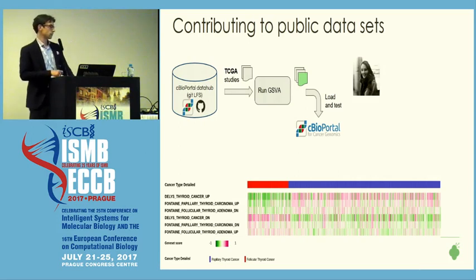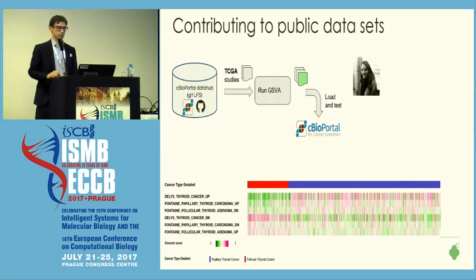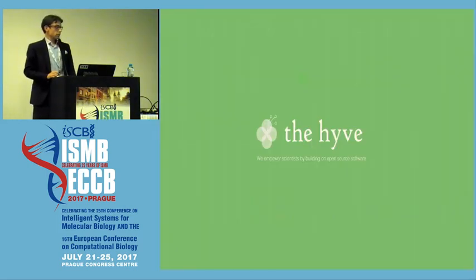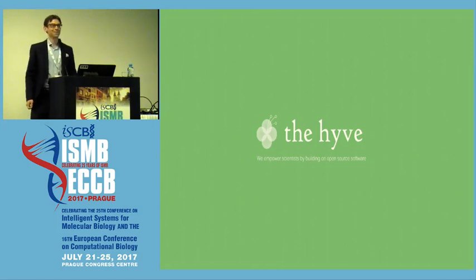Here on the bottom you see a nice example of thyroid cancer where there are some gene sets that nicely delineate papillary from follicle thyroid cancer. That's it. Thanks so much. If you want to know more, find me at my booth or tomorrow at the talk. And if you want to work at the Hive, please send me your CV. Thank you.